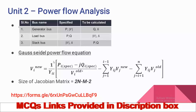The second important method is the Gauss-Seidel method. The power flow equation is: V-i new equals one divided by Y-ii, multiplied by (P-i specified minus j·Q-i specified) divided by V-i old conjugate, minus the summation of Y-ij·V-j new for j from 1 to i minus 1, minus the summation of Y-ij·V-j old for j from i plus 1 to n. The advantage of the Gauss-Seidel method is that it is applicable for small systems; computer memory required is less and the program is simple.